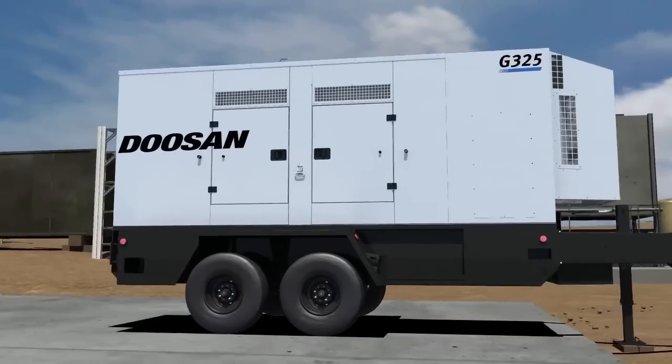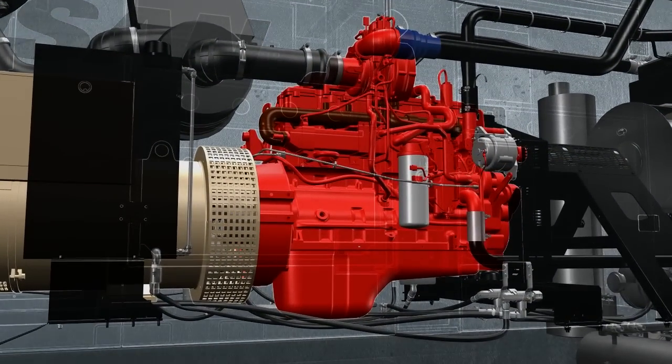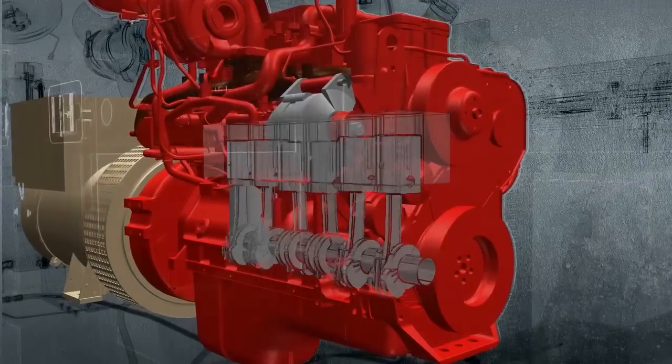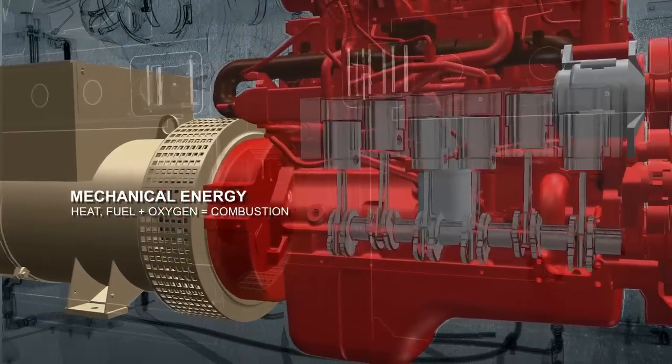A generator engine converts diesel fuel to mechanical energy that rotates the crankshaft. As combustion occurs in each cylinder, energy transmits to the engine crankshaft which generates mechanical power for the alternator.